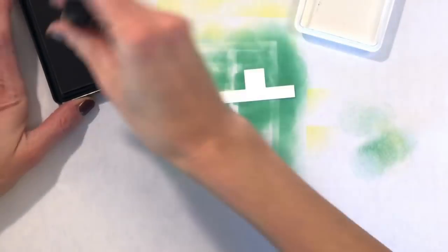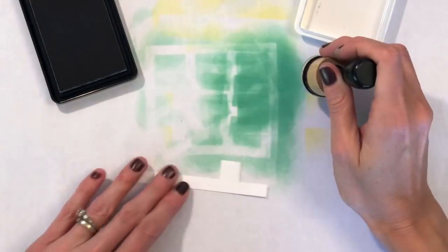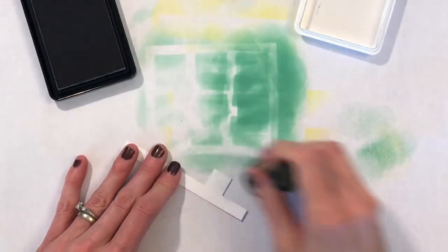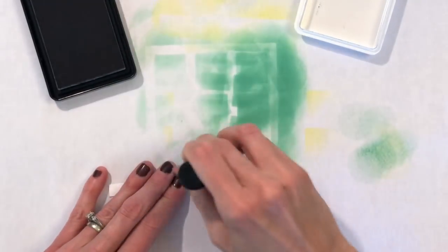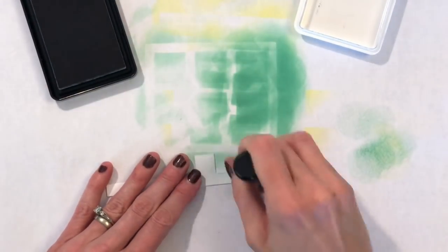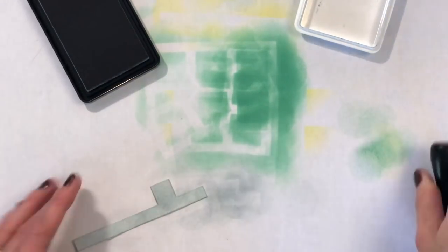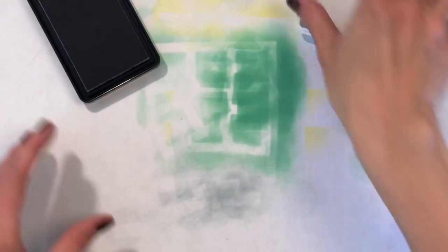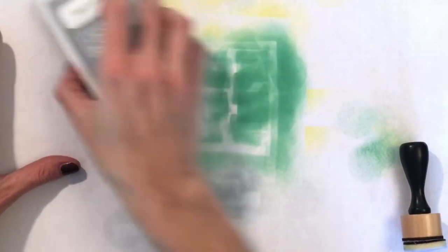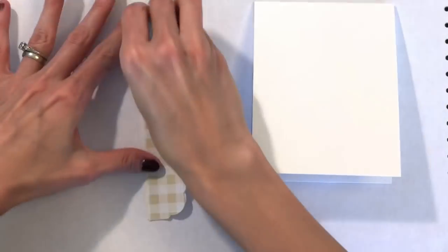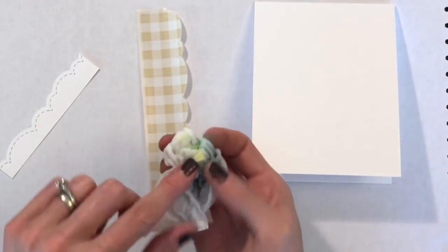Now this is the roof that I cut using the apartment builder die. I'm going to take waffle flowers like a pro, which is just a really pretty gray, and I'm just going to blend all over the entire die cut. So nothing fancy again, very similar to how I blended the grid with the lucky clover, just completely covering it. No gradation, just completely covering.